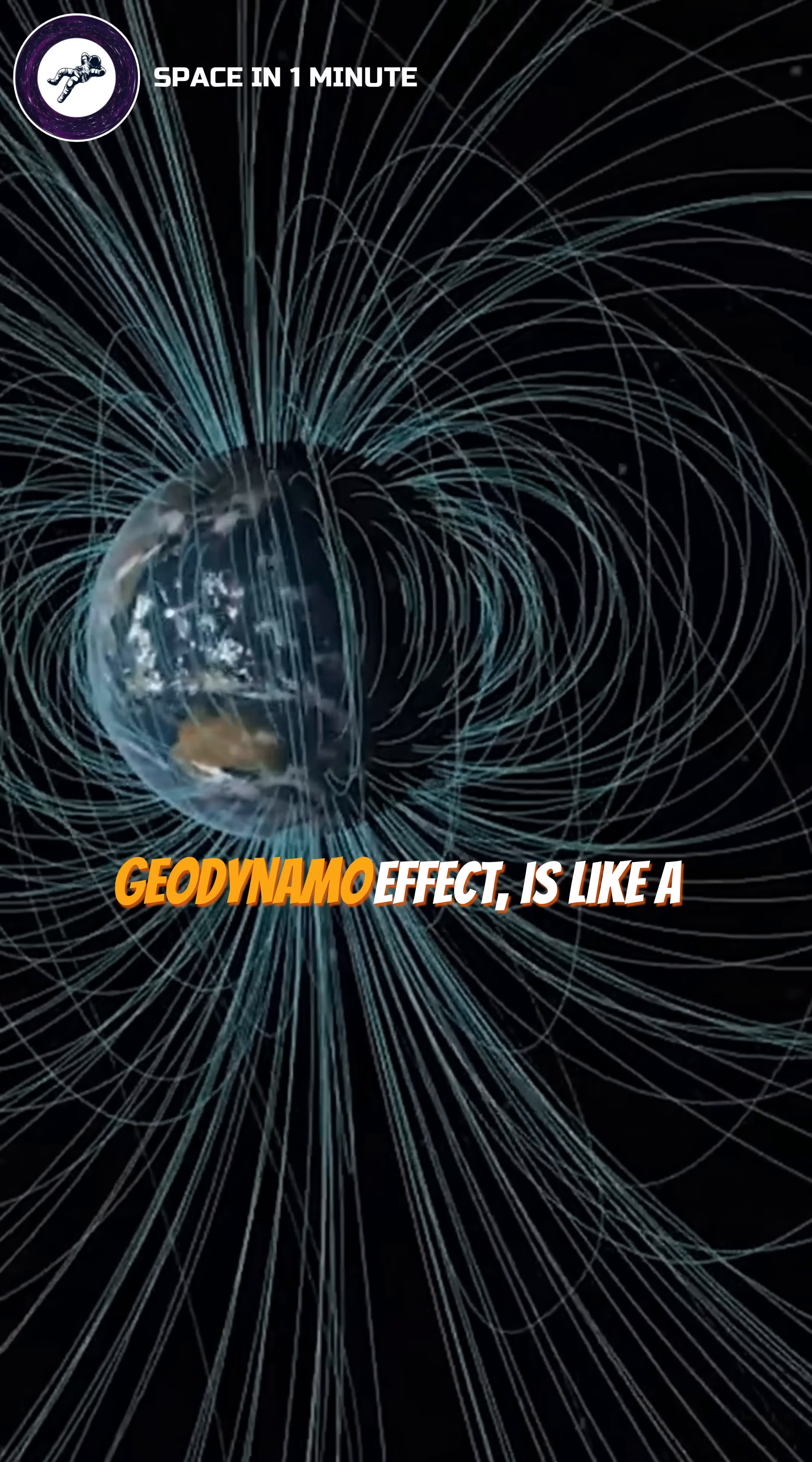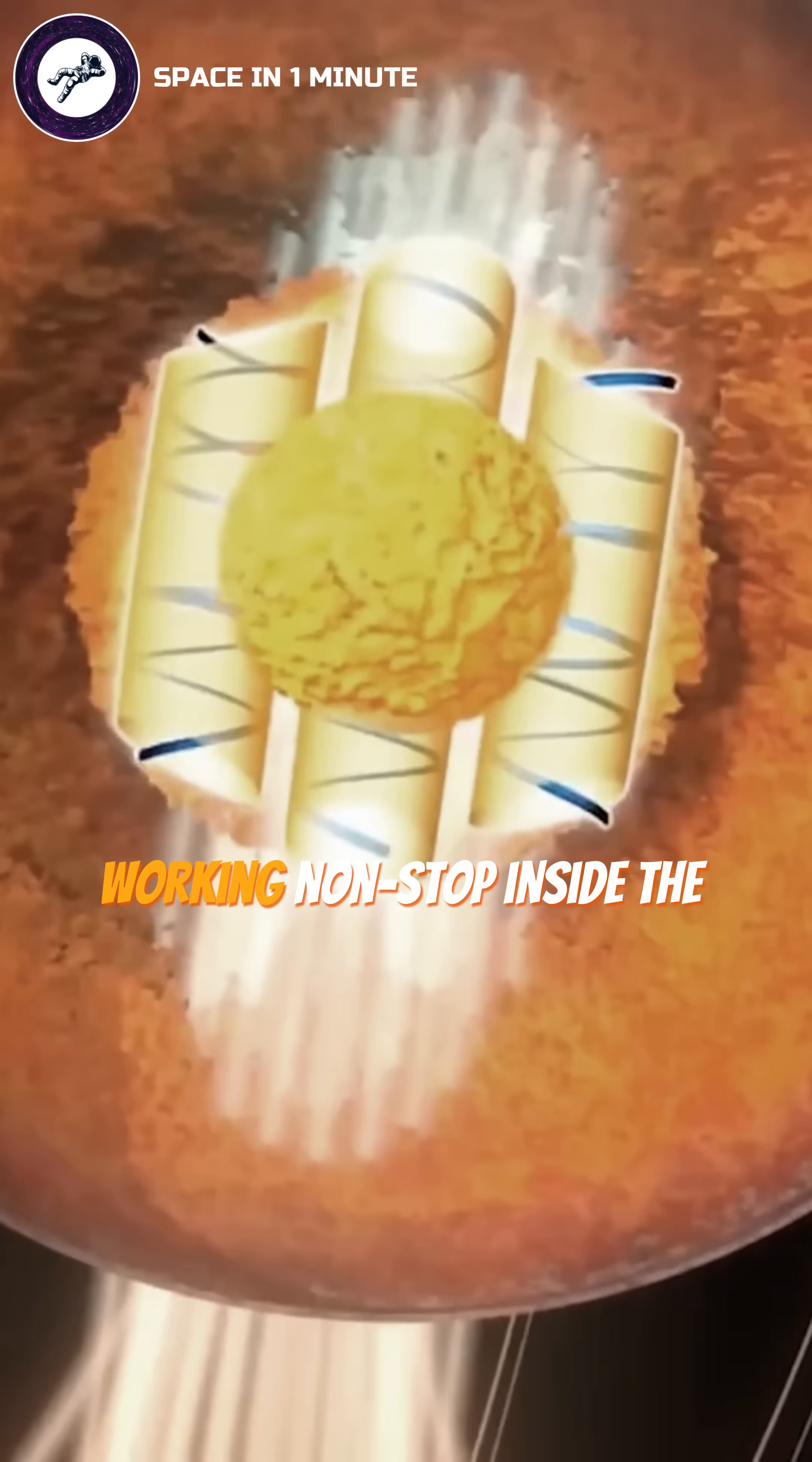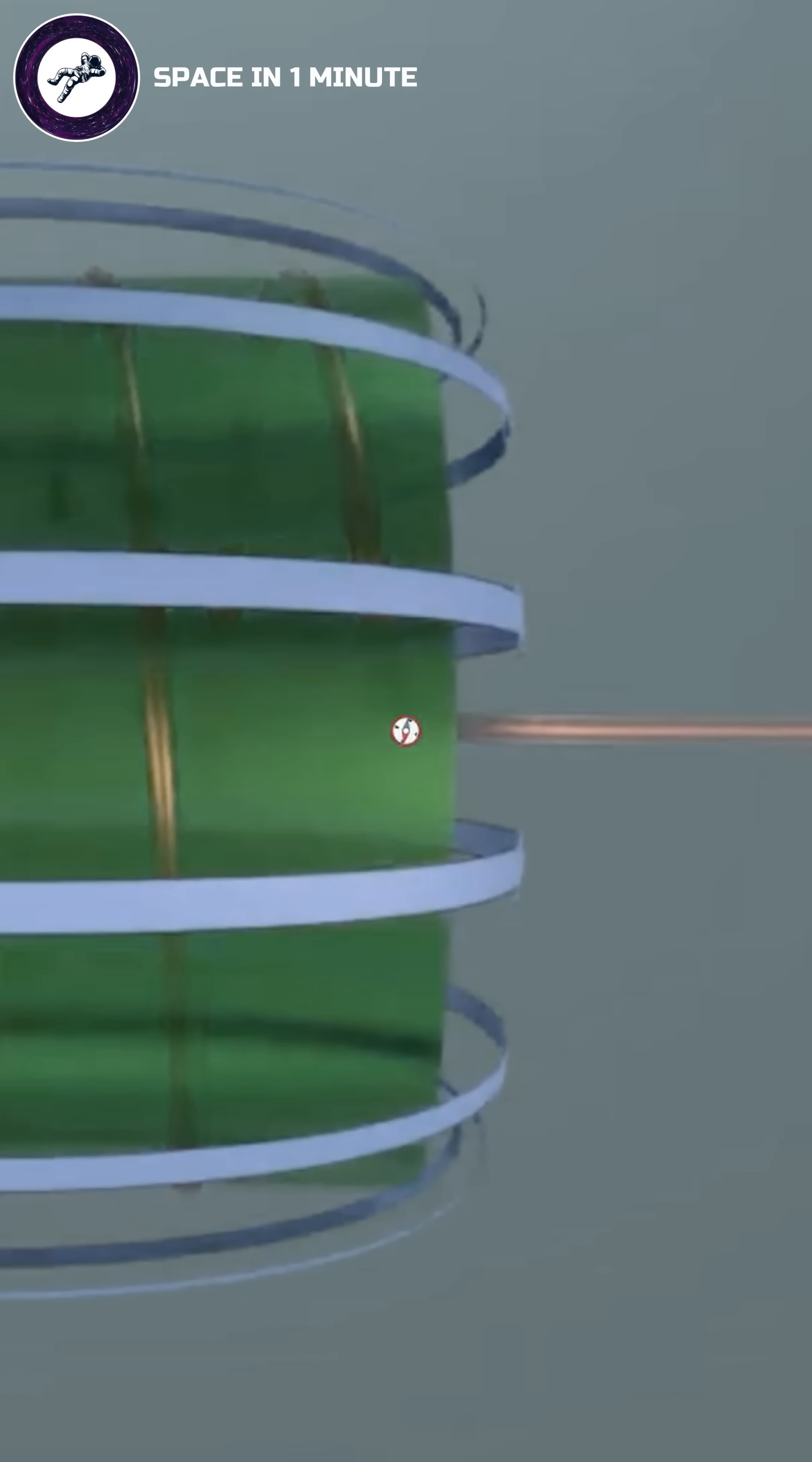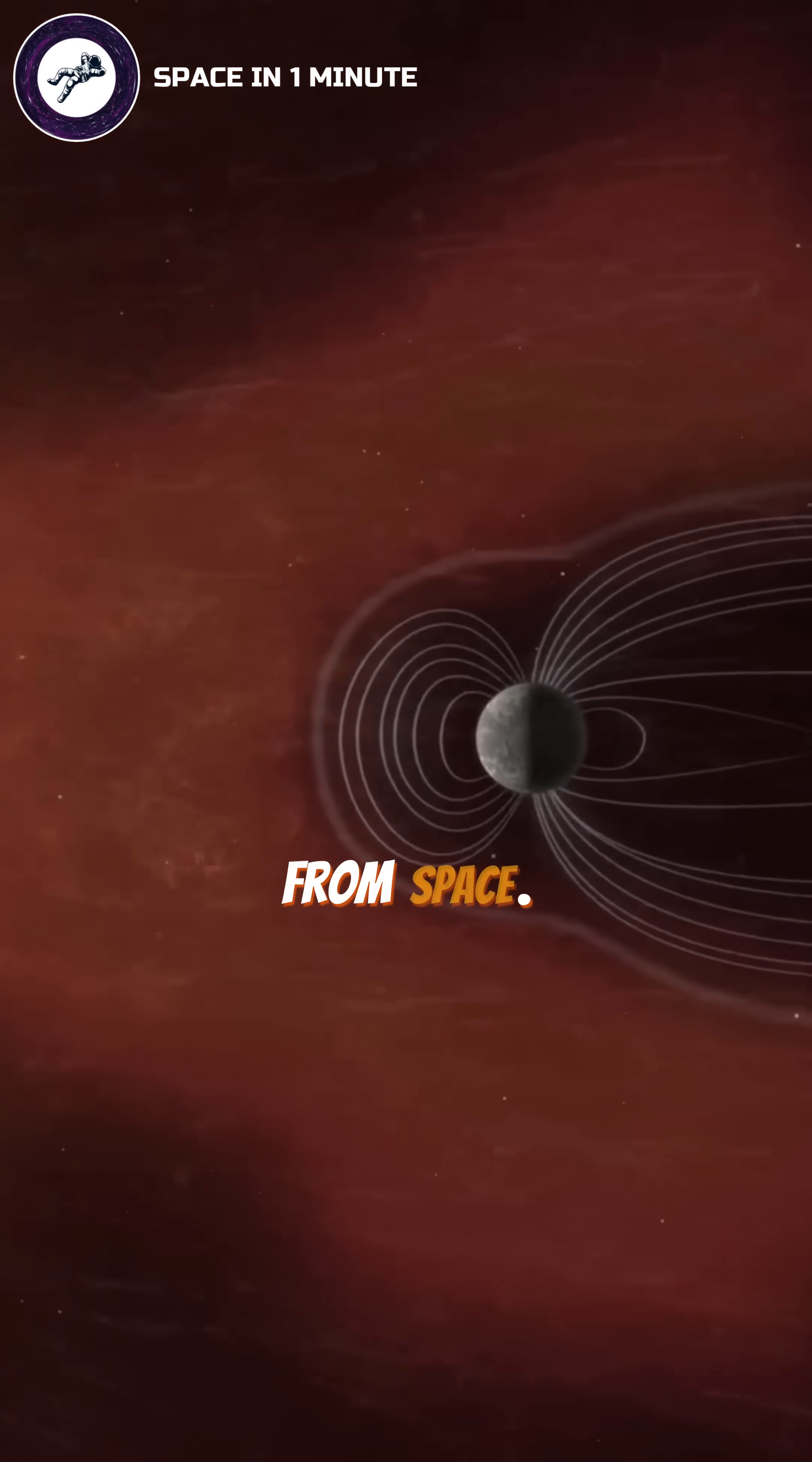This process, called the geodynamo effect, is like a giant invisible machine working non-stop inside the Earth. It's what makes compasses point north and protects us from dangerous radiation from space.